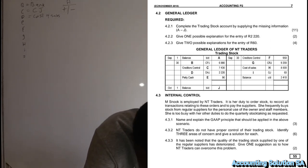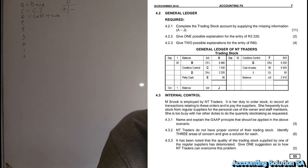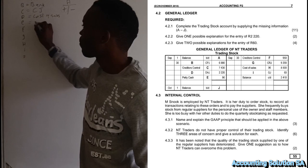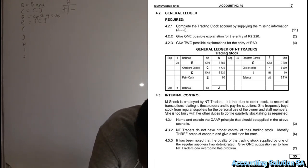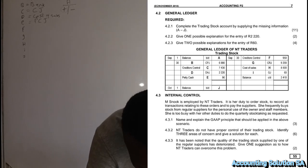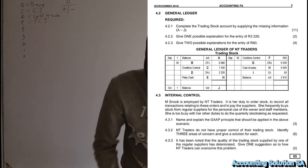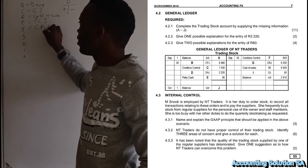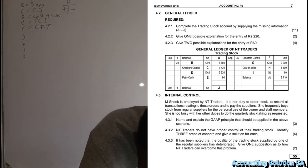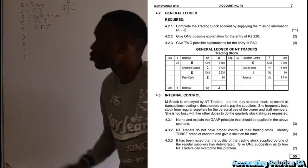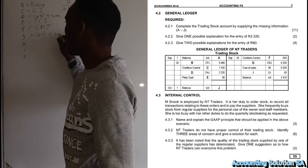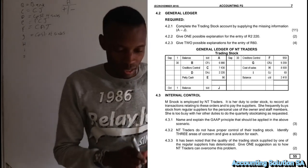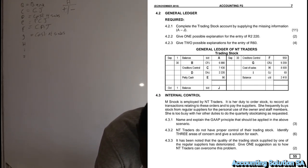Number E is petty cash, which means it must be recorded under the petty cash journal — PCJ. Number F is creditors control on the credit side, so it is going to be CAJ — creditors allowance journal. For the cash receipts journal entry, we record cost of sales, not sales, because this is under the trading inventory account — we receive money so we apply cost of sales.